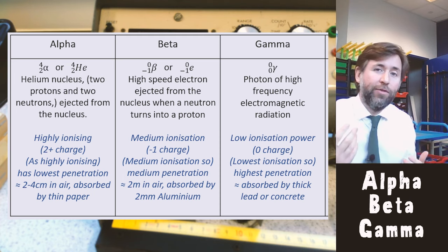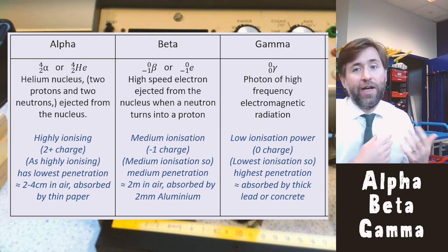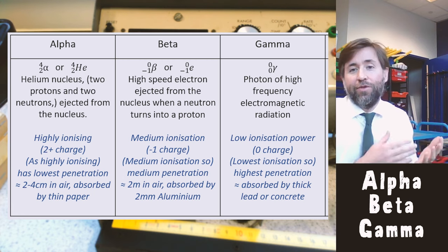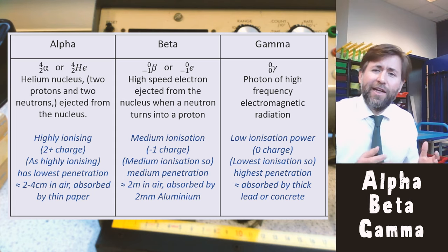Beta on the other hand will go into the body but when it gets there it's not as ionizing as alpha. And if you want to shield yourself from beta then you just need some form of two millimeters or more aluminum shielding.